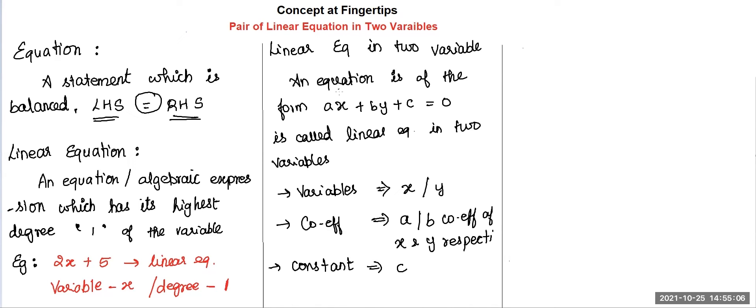Here, if you observe, the degree of x is also one. The degree of y is also one. Therefore, the degree of this polynomial is one. Hence, it will be called linear equation. And we have two variables x and y. Therefore, this is called linear equation in two variables.